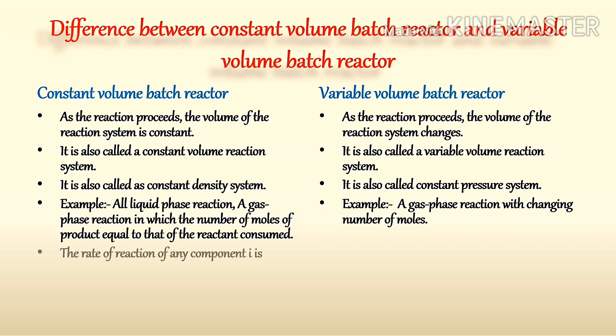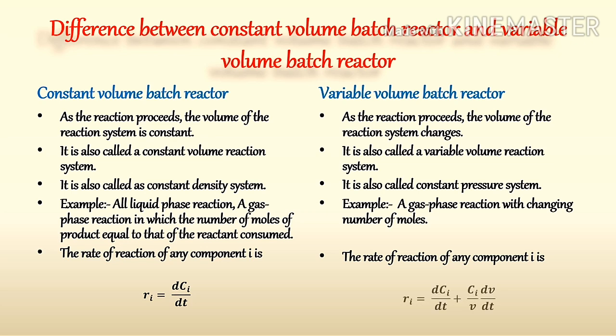The last point: the rate of reaction of any component I for a constant volume batch reactor is Ri = dCi/dt. And the rate of reaction of any component I for a variable volume batch reactor is Ri = dCi/dt + (Ci/V) × (dV/dt). That's all about the difference between constant volume batch reactor and variable volume batch reactor.